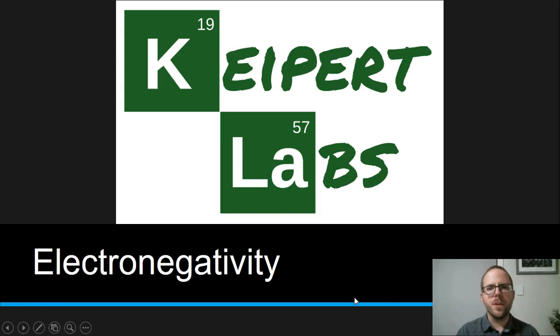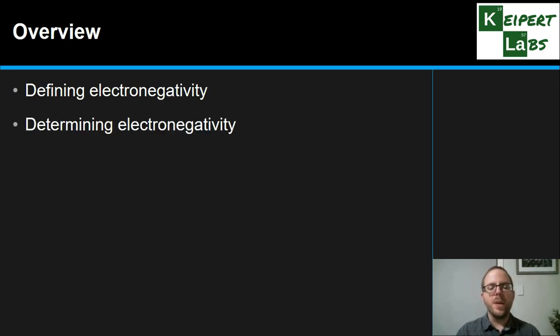Hi everyone, welcome to this episode of Kuypert Labs. In today's video we're going to introduce the concept of electronegativity. First, we'll start by defining what we mean by this term electronegativity. We're going to look at how we determine or calculate the electronegativity of a particular element, and then look at it as a property that exists in a trend across the periodic table. We're going to look at what that trend is and have a go at explaining why it occurs in that way.